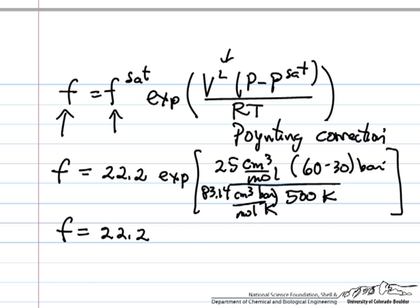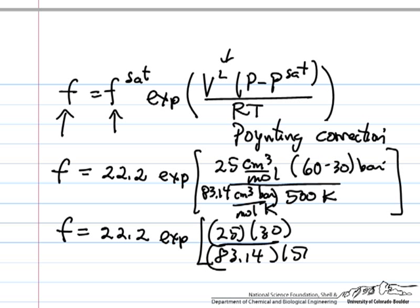So now I can calculate the fugacity at 60 bar. The units cancel here: 25, 30, 83.14, and 500.